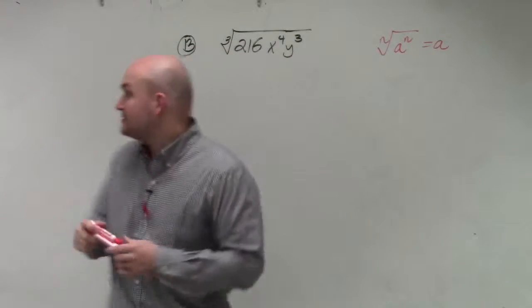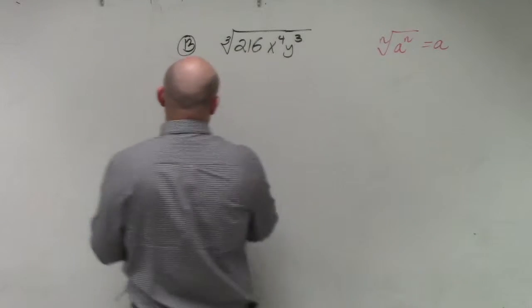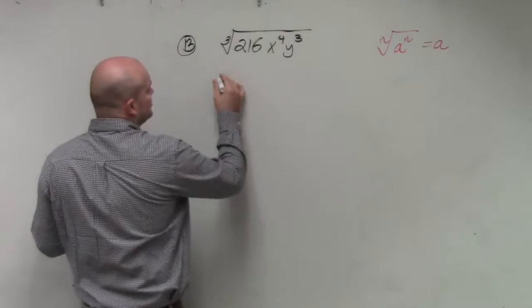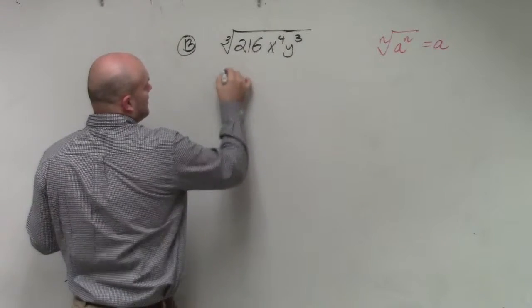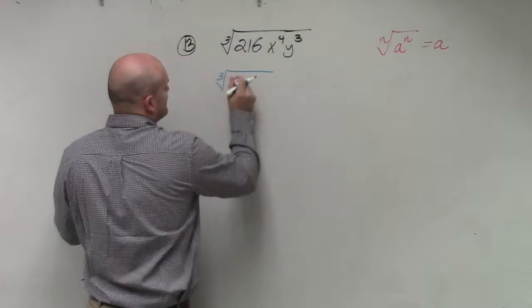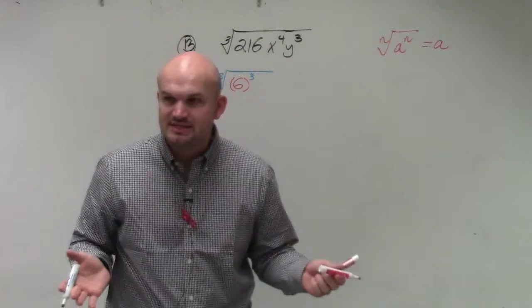So 216, as we take a look at it, is a cubed number. That is 6 cubed. So I could say the cube root of 6 cubed. And if you plugged it in your calculator, you'd see that 6 cubed is 216.